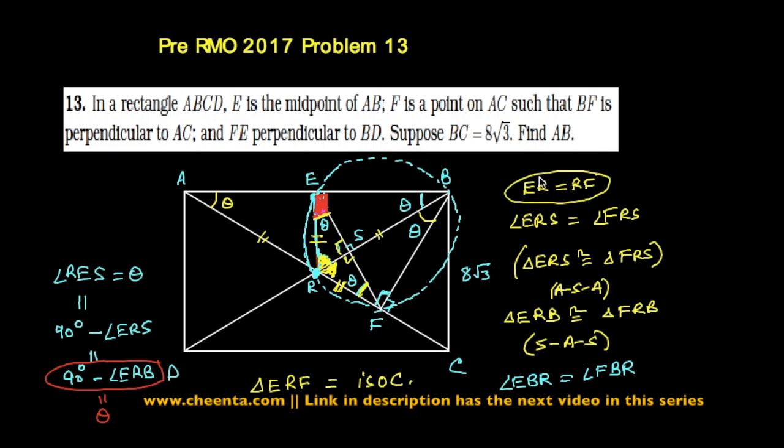So this is theta. Okay, so we are almost done with the problem, because notice that we can actually tell what is theta. One theta, two theta, and three theta—these three angles add up to 90 degrees. So 3 theta is 90 degrees, which means theta must be 30 degrees.